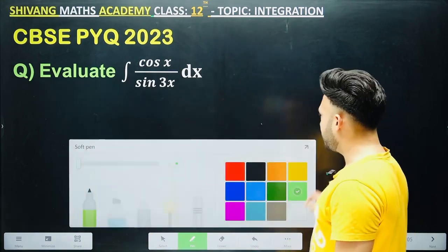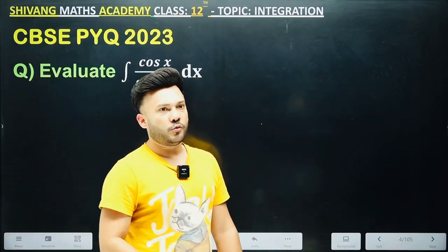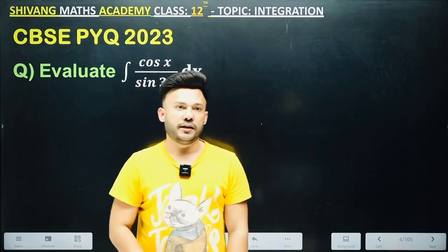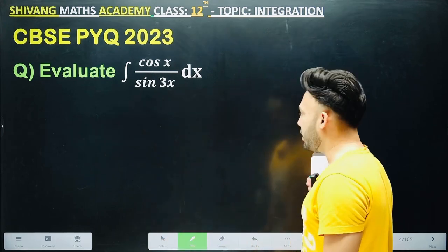Cos x, sin 3x. Let me tell you one thing. There are a total of 15 sets in the whole of India. So there are questions from 15 sets. Now calculate if there are 4 questions in a set. So 15 times 4 equals 60 questions, meaning we can solve 60 questions in a year.